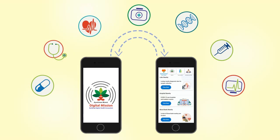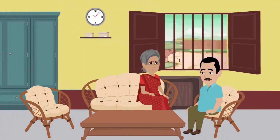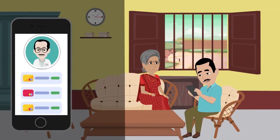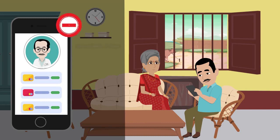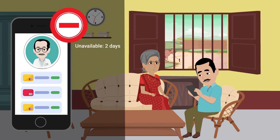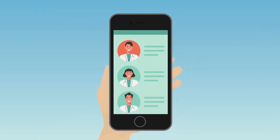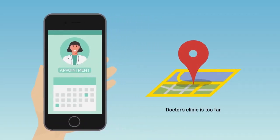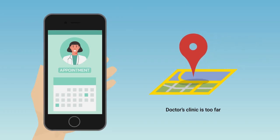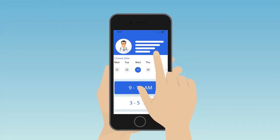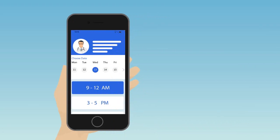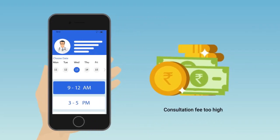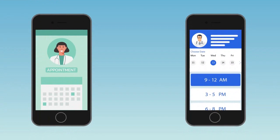Let's understand it with an example. Rahul wants to get his mother's painful knee checked. He finds that the specialized doctor he regularly visits is unavailable for another two days. So he browses through commonly used health apps to book an appointment at his convenience and to avoid long waiting times. He finds another specialized and verified doctor through one app, but that doctor's clinic is too far from his house. He then explores another app that shows the immediate availability of the doctor, but finds the consultation fee too high. With two different apps, Rahul experiences two different situations.